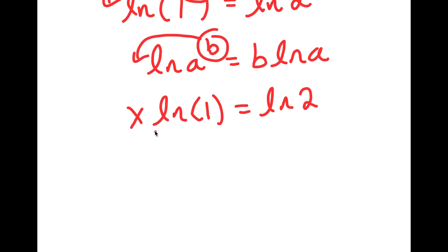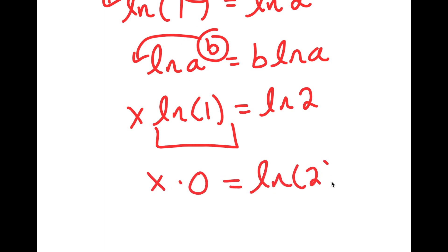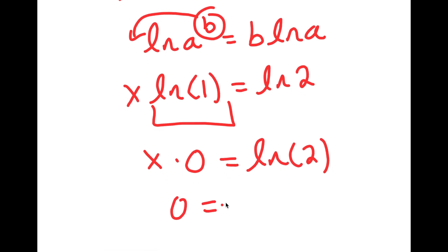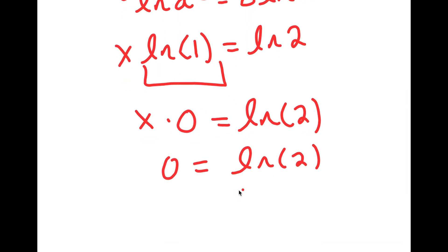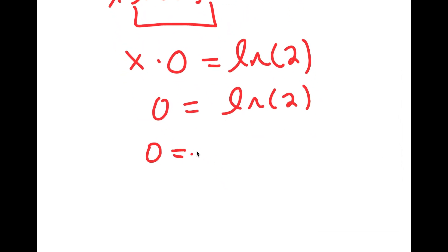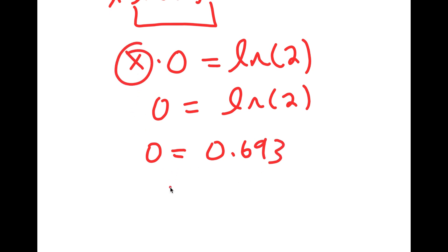Now, ln of 1 is actually equal to 0. So I have x times 0 is equal to ln 2. And x times 0 is 0, so I get 0 is equal to ln 2. But ln 2 is equal to 0.693, so there is no solution because the variable x is gone. This means there's no real solution.